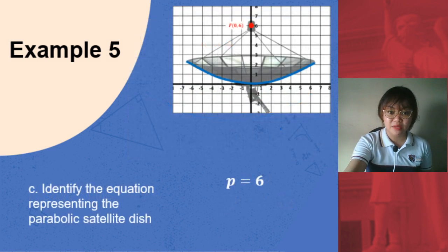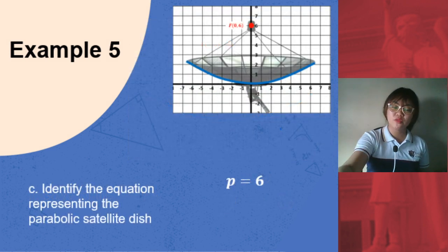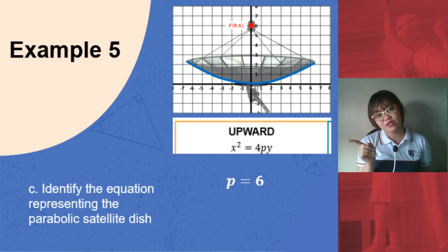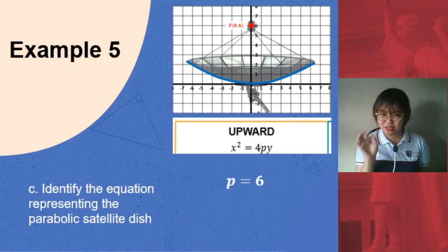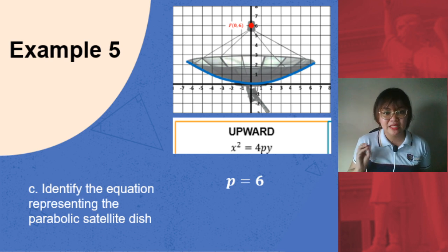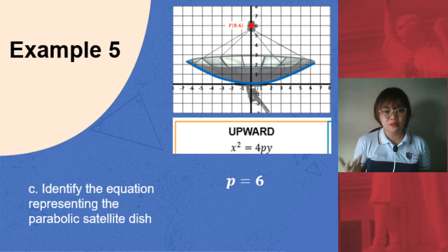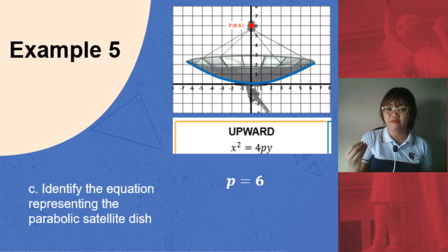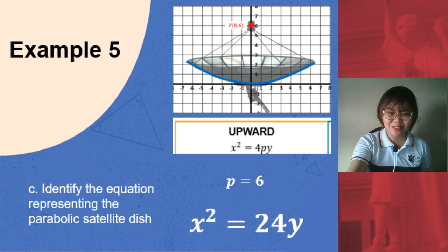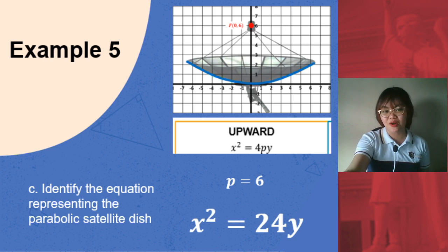Now that we have the p-value, since the parabola is opening upward, we remember the formula for the standard form of the equation of a parabola opening upward, and we substitute the value of p. p is 6, so x² = 4py, which simplifies to x² = 24y.